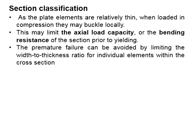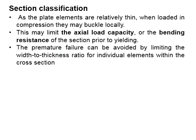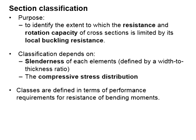As the plate elements are relatively thin, when loaded in compression, they may undergo local buckling. This may limit the actual load capacity or the bending resistance of the sections prior to yielding. This premature failure can be avoided by limiting the width-to-thickness ratio of the individual elements within the cross section. The purpose of section classification is to identify the extent to which the resistance and the rotation capacity of cross sections is limited by its local buckling resistance.